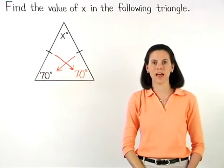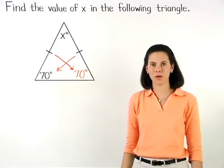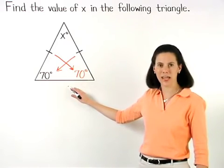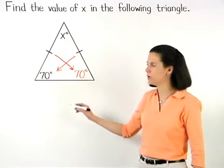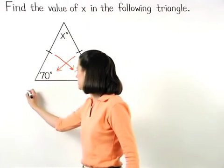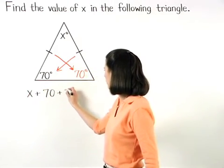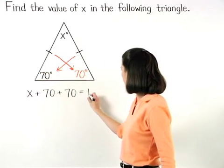Now to find the value of x, remember that the sum of the measures of the angles of a triangle is 180 degrees. So we can set up the equation x plus 70 plus 70 equals 180.